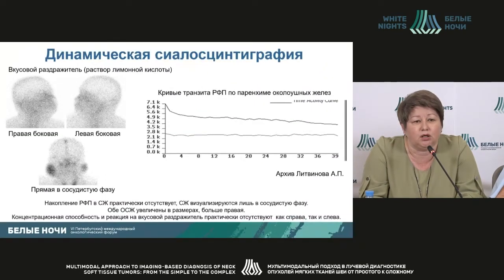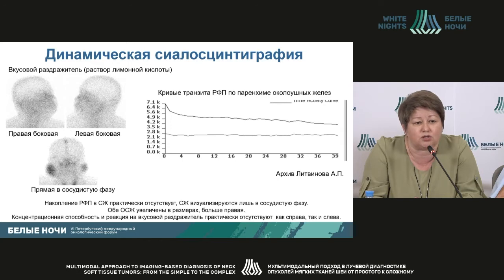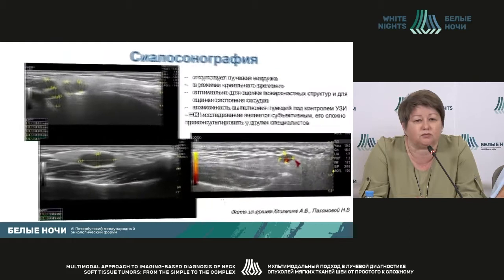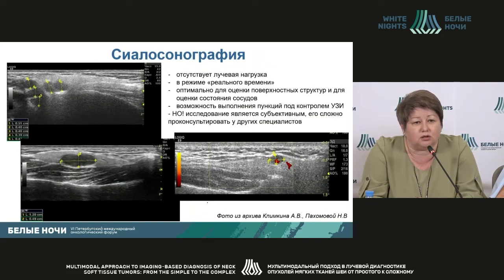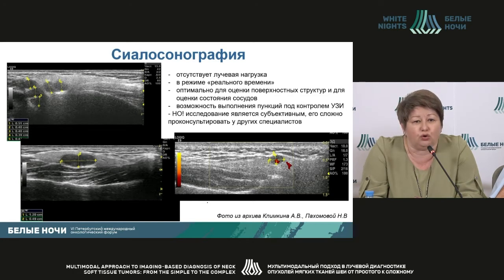That's exactly confirmed by the pictures. Dynamic sialoscintigraphy allows us to assess the concentration for tasting. This curve shows that there is no reaction to a taste irritator and no concentration ability. Sialoscintigraphy gives a big advantage — there is no radiation, plus it's a real-time investigation. It's optimal for surface structures and for vascular condition assessment.